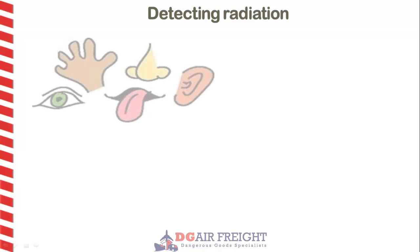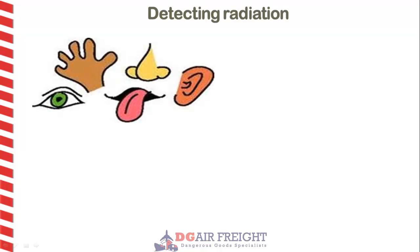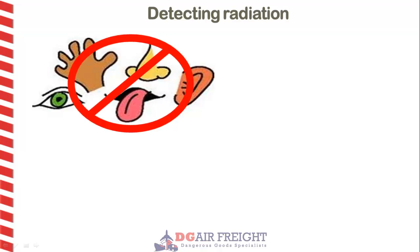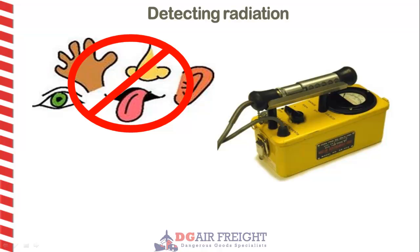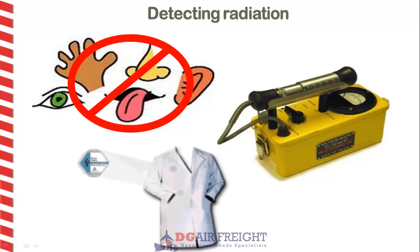Radiation from radioactive materials cannot be detected by any of our senses; it can only be detected using special equipment, like a Geiger-Müller counter. Some people receive radiation exposure as part of their employment. In such environments, worker radiation exposures are carefully monitored with the use of personal dosimeters to ensure that everyone's exposures are kept as low as reasonably achievable.